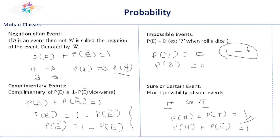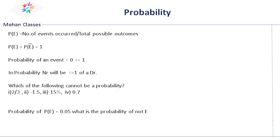These are some of the important concepts. If you understand these concepts, it will be easy for you to answer questions. P of E means number of events acquired divided by total possible outcomes. This total possible outcomes we can call it as n of S — that is the sample space. n of S means sample space.